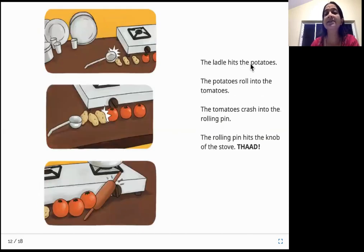The ladle hits the potatoes. The potatoes roll into the tomatoes. The tomatoes crash into the rolling pin. The rolling pin hits the knob of the stove. So it is setting a sequence of events. The ladle that fell down now hits the potatoes. The potatoes roll onto the next one until they reach the tomatoes. The potato hits the tomatoes and the tomatoes roll and hit the tomato which is adjacent to that. Finally, the last tomato hits the rolling pin which is at an angle. So the rolling pin then falls down hitting the gas knob turning it off.